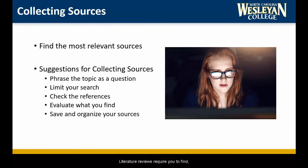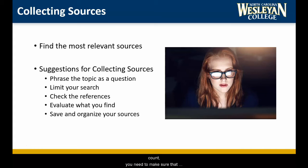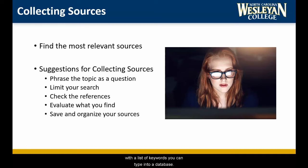Literature reviews require you to find, read, understand, and synthesize information from many sources. Most professors ask for at least 10 sources. However, it is not unheard of for published literature reviews to include dozens, even hundreds, of books and articles. Because your review will be limited by time and page count, you need to make sure that you collect the most relevant sources concerning your topic. Phrase the topic as a question or series of questions. Rather than searching for everything that can be found on the topic, write down specific questions you want your literature review to answer. This will help you come up with a list of keywords you can type into a database.